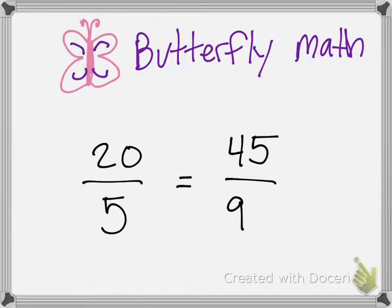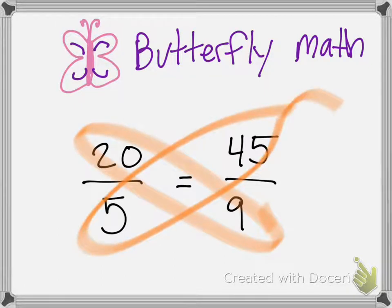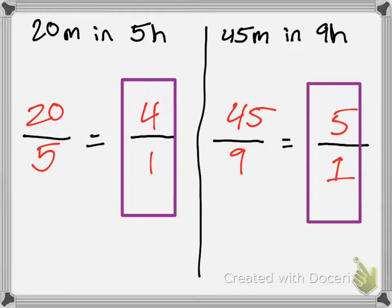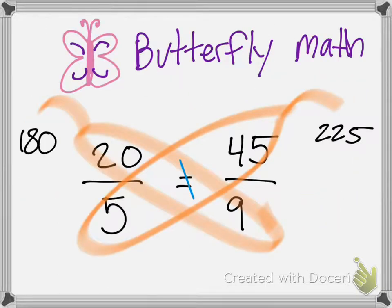You can also do butterfly math, which is when you cross-multiply like this. We find that 9 times 20 is 180 and 5 times 45 is 225. Those are not the same number, so these fractions are not equivalent — just like we saw before. And we see that 45 over 9 is the bigger fraction, and this proves it.